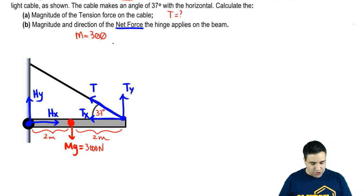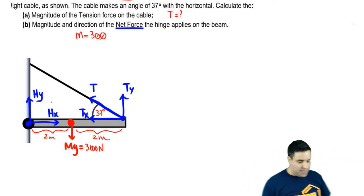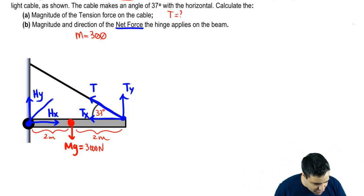I want to know what is A, tension on the cable, and B, the net force that the hinge applies on the beam. Before we talk about B, let me draw the hinge forces. Again, there's going to be always an Hx to cancel out the Tx. And we're going to assume an Hy up, as always.